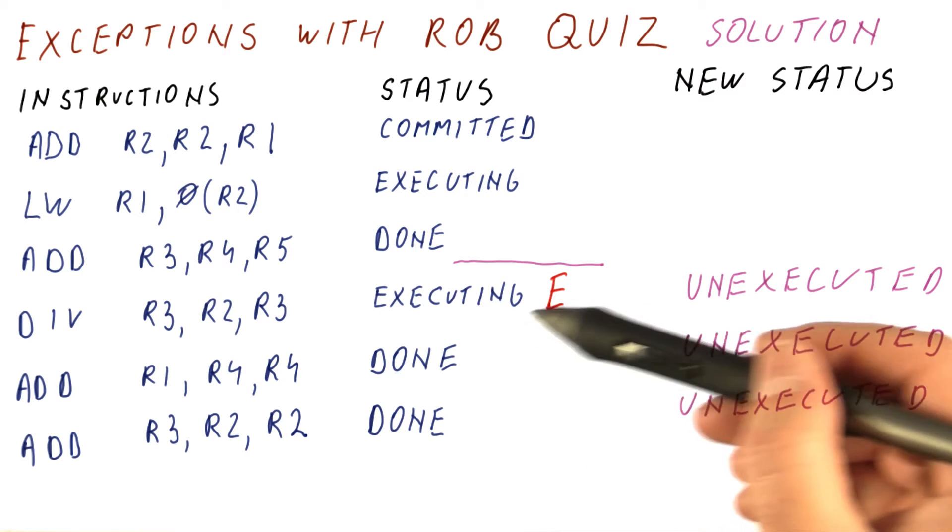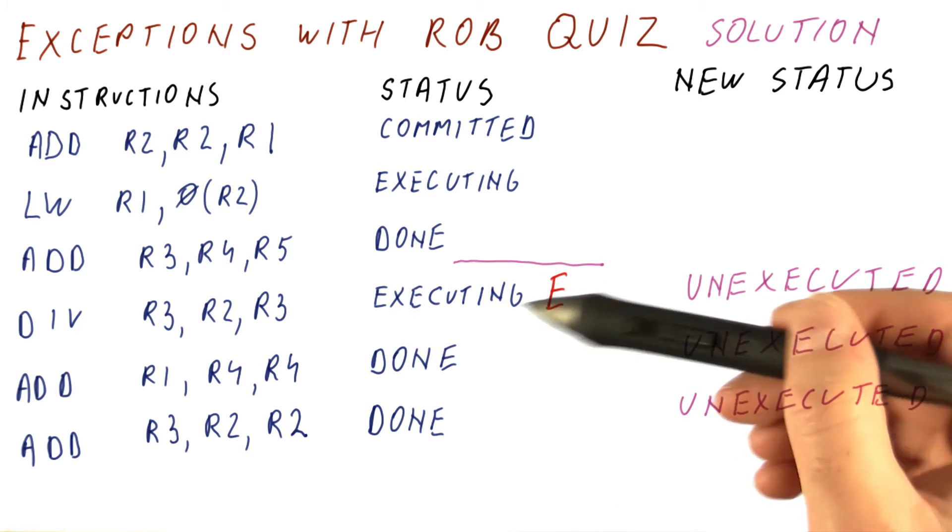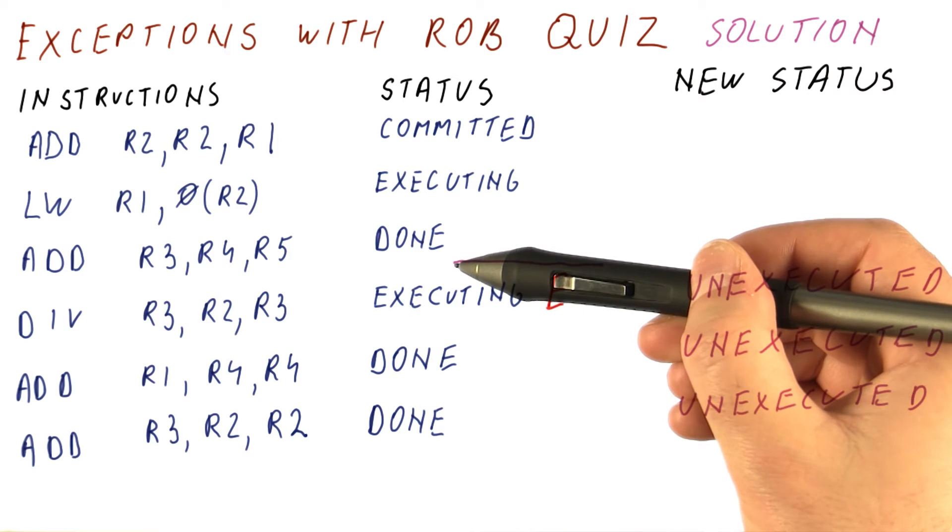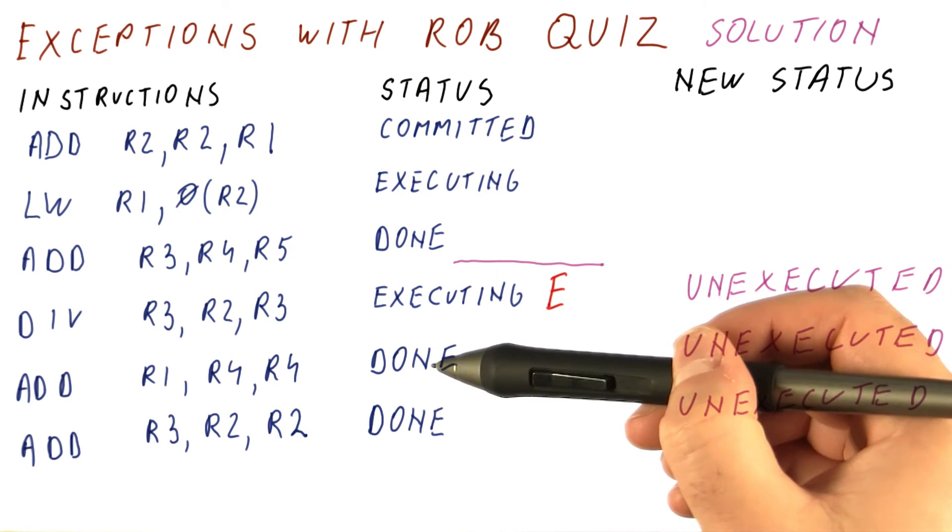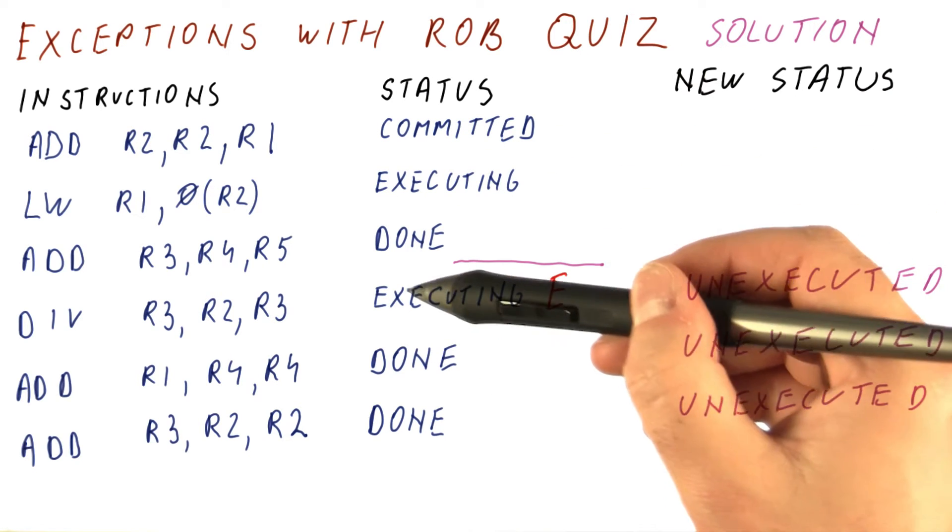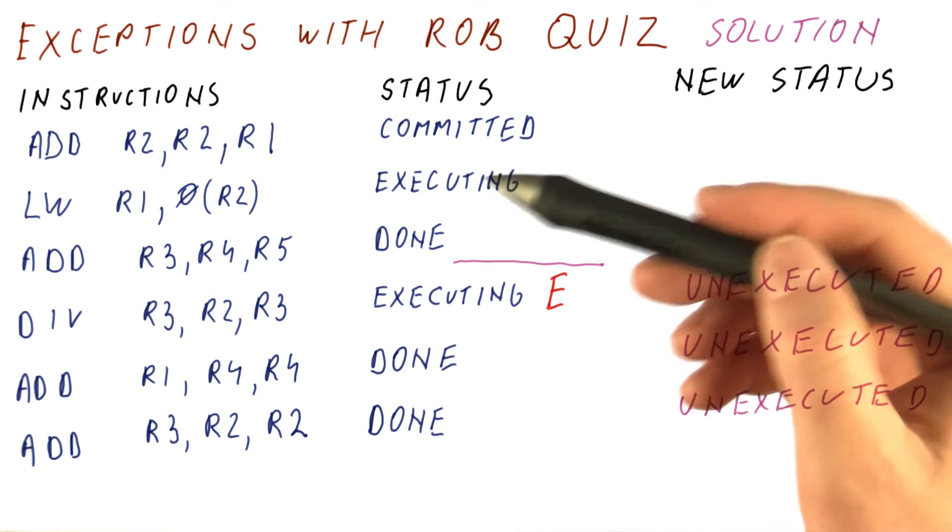So pretty much what we do is when we have an exception such as divide by zero, the correct state of the processor should be right before this instruction, if we were doing these instructions one at a time. So what we do is we roll back the execution of all these instructions. How do we do that?